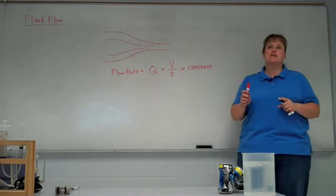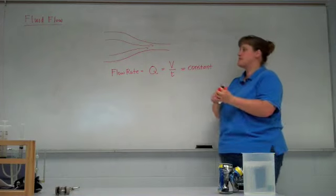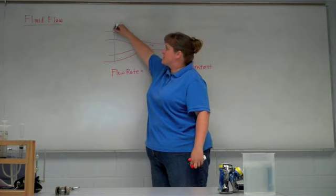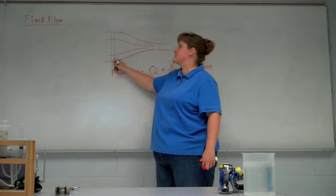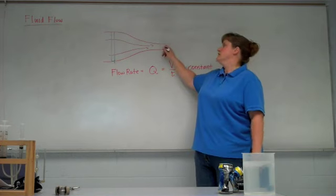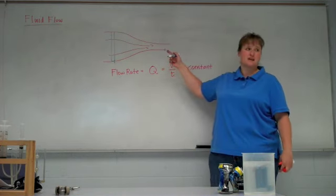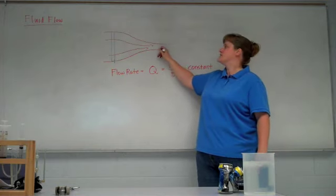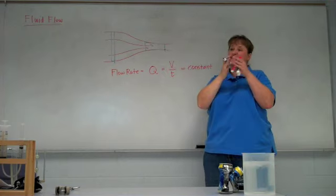This must be constant in those conditions that we specified. So the same amount of volume per time has to pass by any point. So for example, if I'm looking right here, if I cut out a section, if this volume passed by this point in one second, that same amount of volume would have to pass by the second point in the same amount of time. But the same volume takes up a larger region, or at least a larger length.